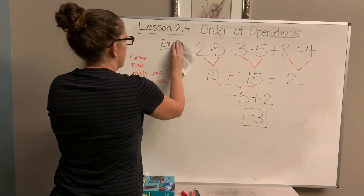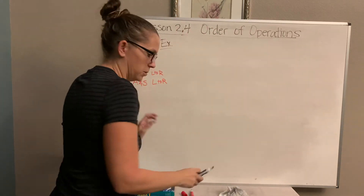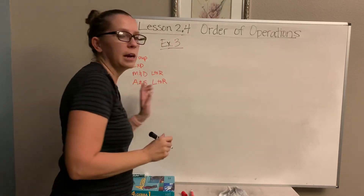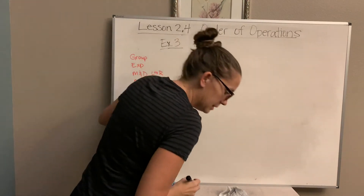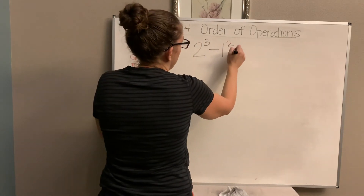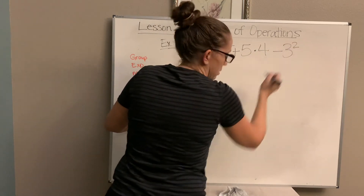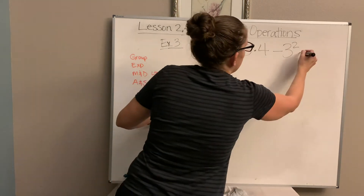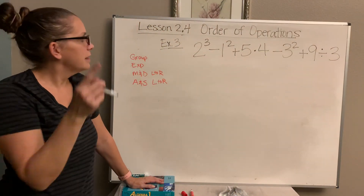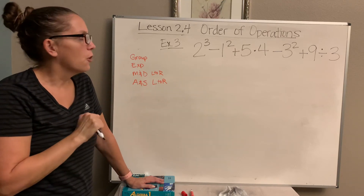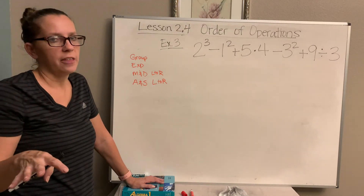Last one. You can always hit pause and text me if you have a question. Example three is going to be long and I want you to try it on your own: 2 cubed minus 1 squared plus 5 times 4 minus 3 squared plus 9 divided by 3. I want to give you some hints, but I'm not going to. I think a couple of you can get this without me helping at all. So go ahead and hit pause, everybody try it on your own, even if it looks scary, then come back and let's check it together.